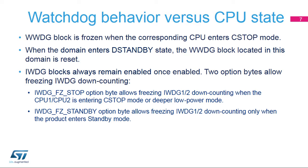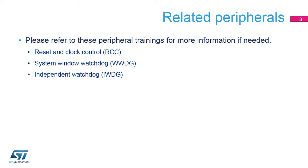IWDG blocks always remain enabled once enabled. Two option bytes allow freezing IWDG downcounting. The IWDG-FZ-STOP option byte allows freezing IWDG1 and 2 downcounting when CPU1 or CPU2 is entering C-STOP mode or deeper low-power mode: D-STOP, D-STANDBY, or product standby mode. An IWDG-FZ-STANDBY option byte allows freezing IWDG1 and 2 downcounting only when the product enters standby mode. Please refer to these peripheral trainings for more information if needed: Reset and Clock Control or RCC, System Window Watchdog or WWDG, or Independent Watchdog or IWDG.